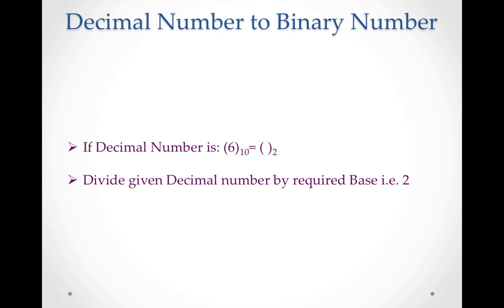Now, decimal to binary conversion. The first problem: if you have decimal number 6 (base 10), convert it to base 2, which is binary. The procedure is to divide the given decimal number by the required base. Since we need base 2, we have to divide 6 by 2.